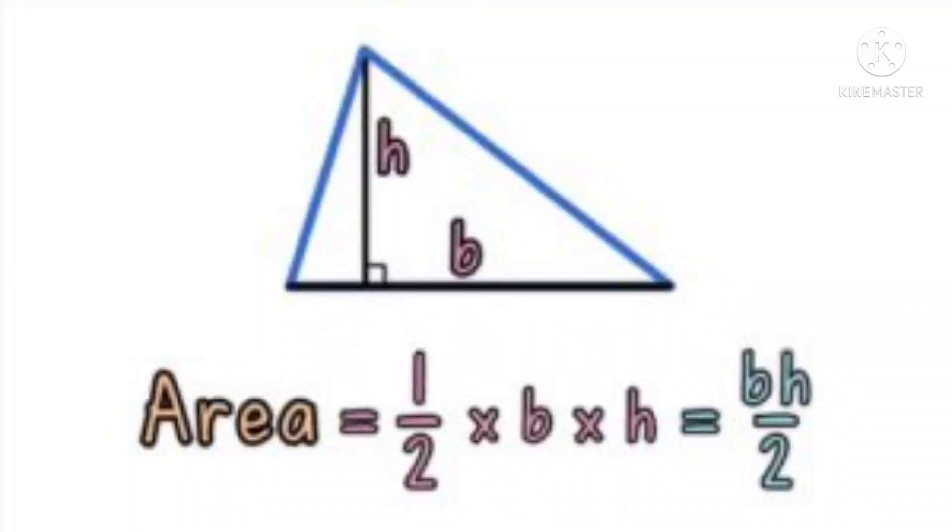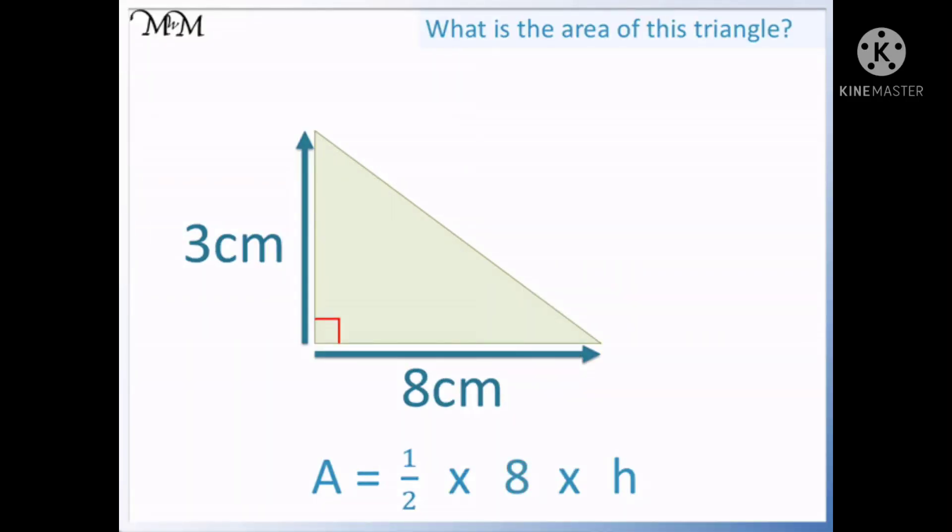Hi friends, welcome back to my channel. In this video we're gonna learn the area formula for a triangle. So let's start. Area equals half multiplied by breadth multiplied by height, which equals bh divided by two. So this is the formula for a triangle. Let's see an example: three centimeter height, eight centimeter breadth.